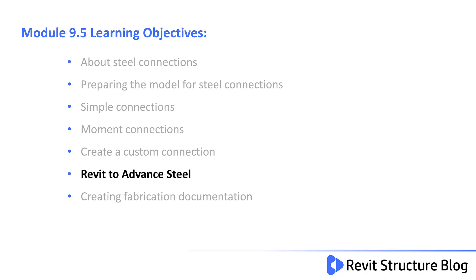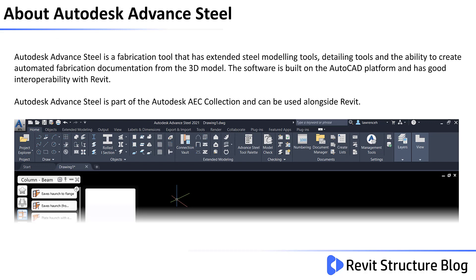Welcome to Module 9.5. In this lesson you learn how to connect Revit to Advanced Steel. Autodesk Advanced Steel is a fabrication tool that has extended steel modeling tools, detailing tools, and the ability to create automated fabrication documentation directly from the 3D model. The software is built on the AutoCAD platform and has good interoperability with Revit. Autodesk Advanced Steel is part of the Autodesk AEC collection and can be used alongside Revit.